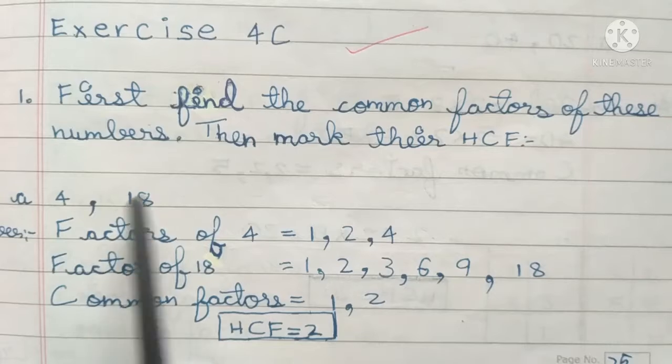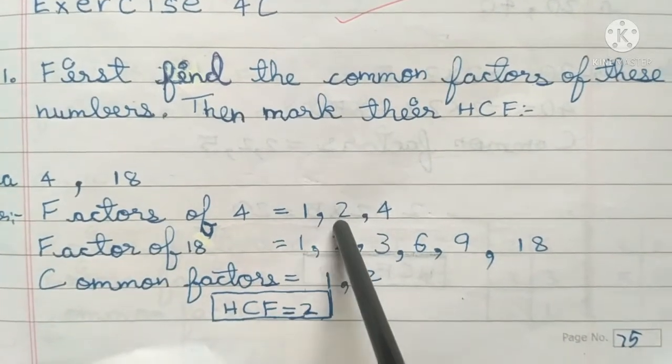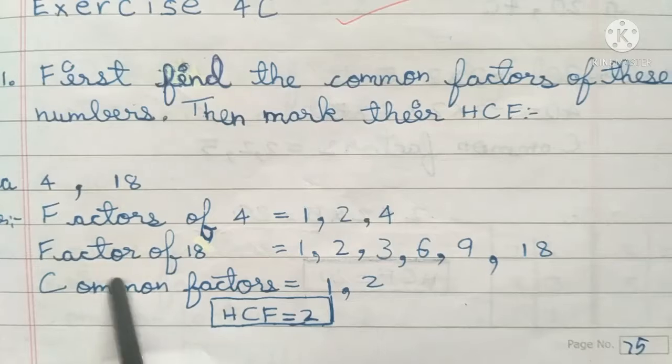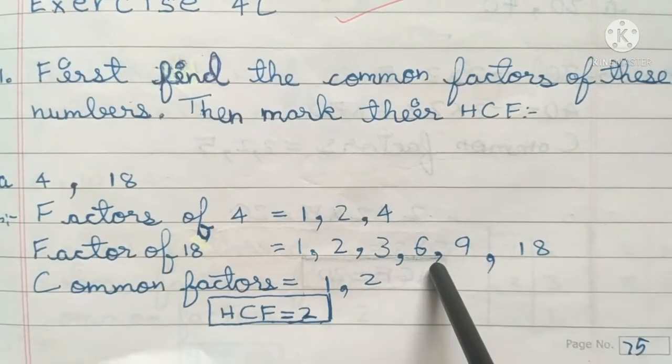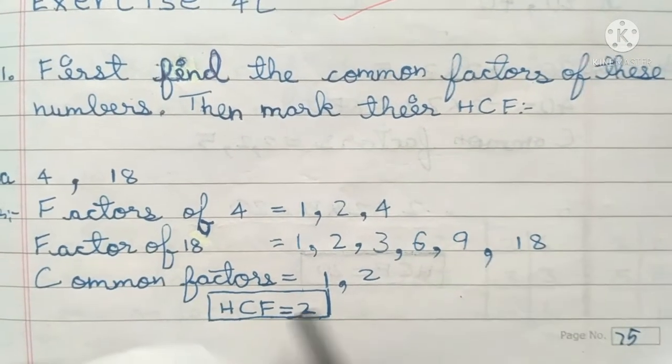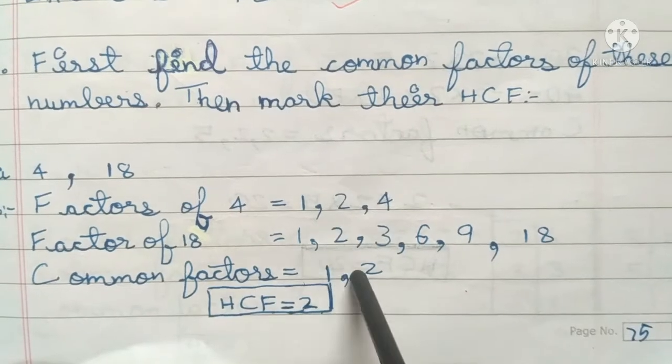First one: 4 and 18. Answer: factors of 4 are 1, 2, 4. Factors of 18 are 1, 2, 3, 6, 9, and 18. Common factors are 1 and 2.